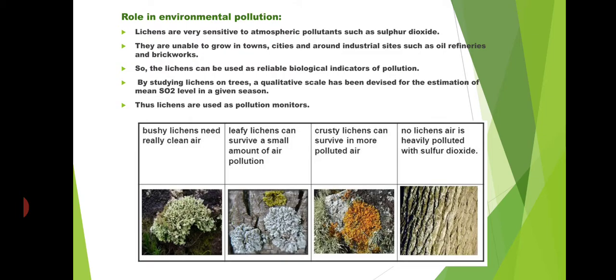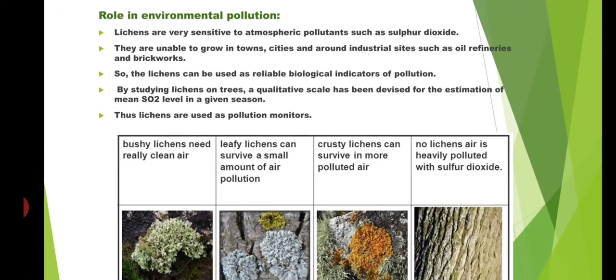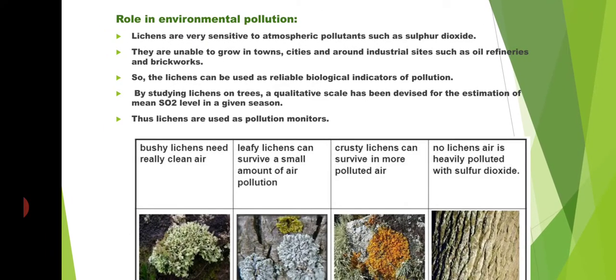Next is the role of lichens in environmental pollution. Lichens are considered pollution indicators. Lichens are very sensitive organisms to atmospheric pollutants such as sulphur dioxide. Sulphur dioxide is a toxic pollutant created due to urbanization, decaying of organic waste, and burning of vehicles using petrol and diesel.